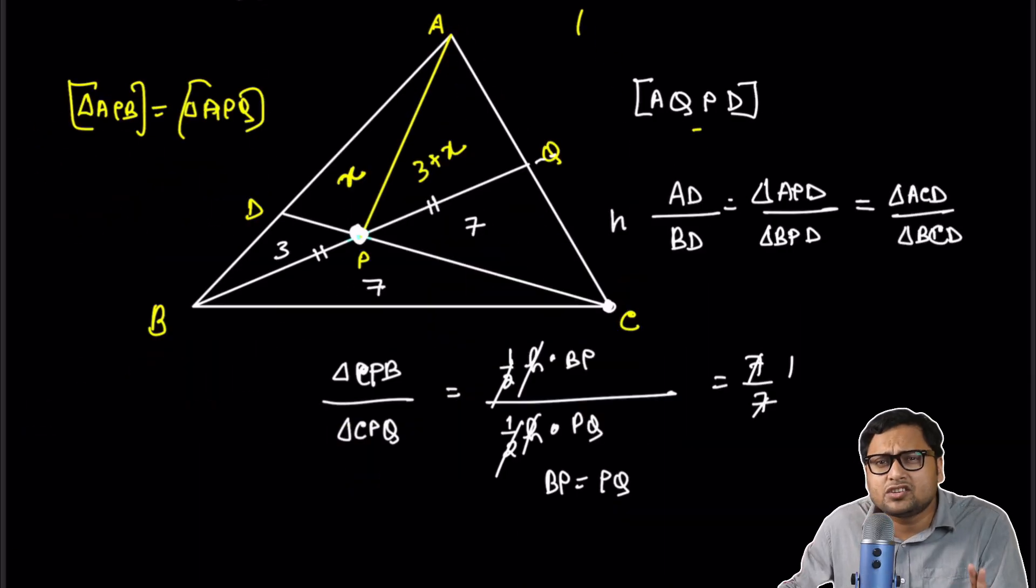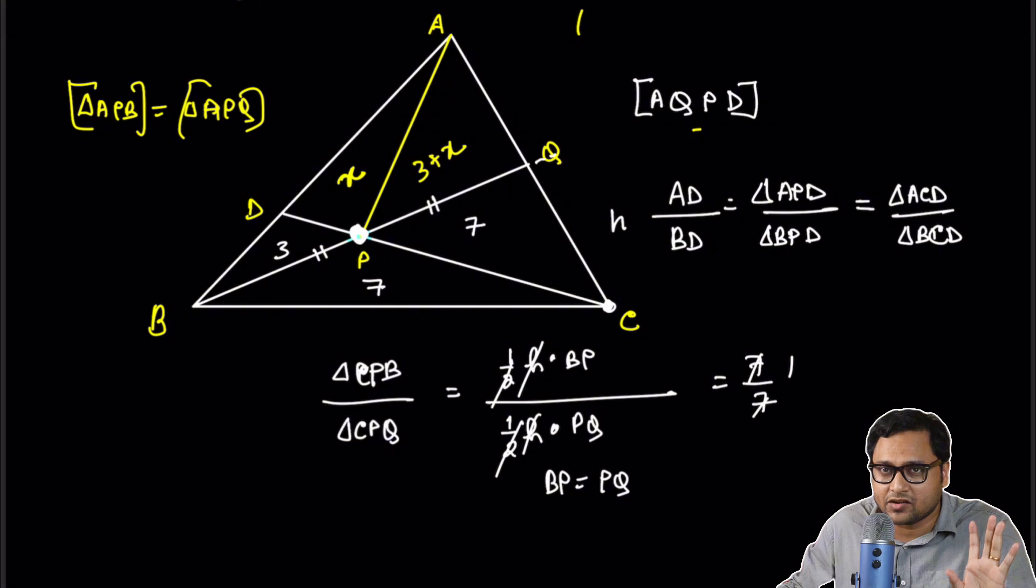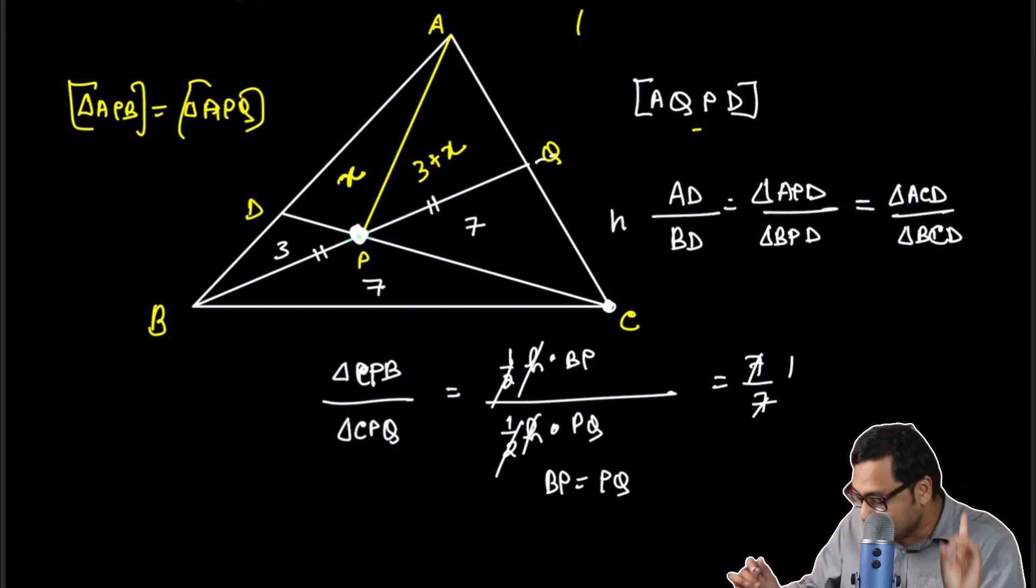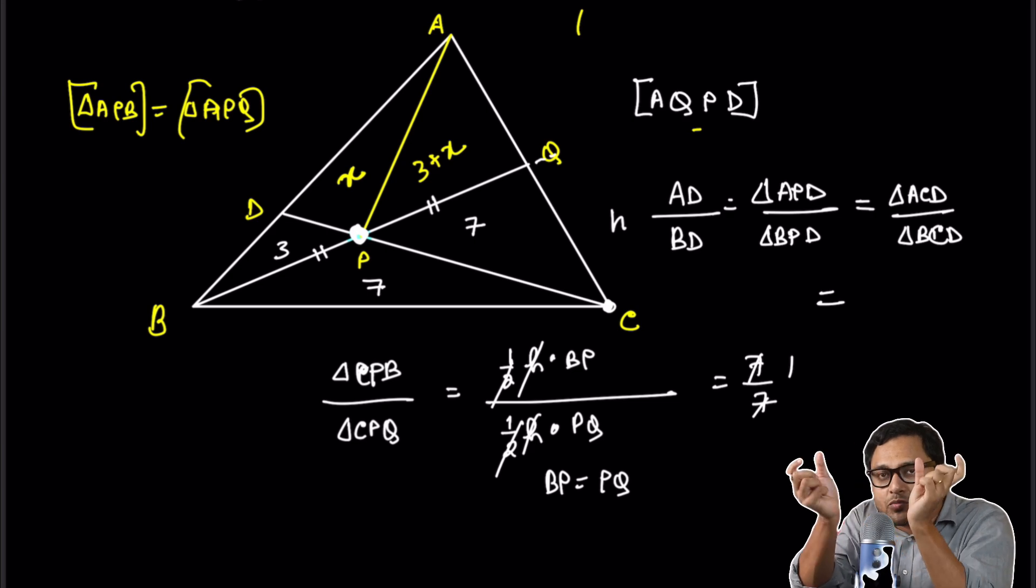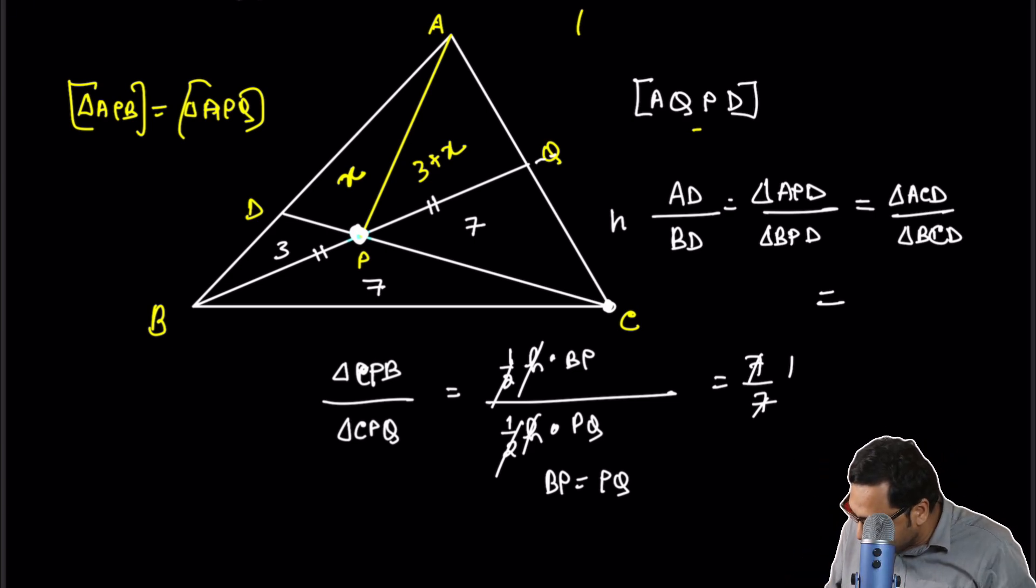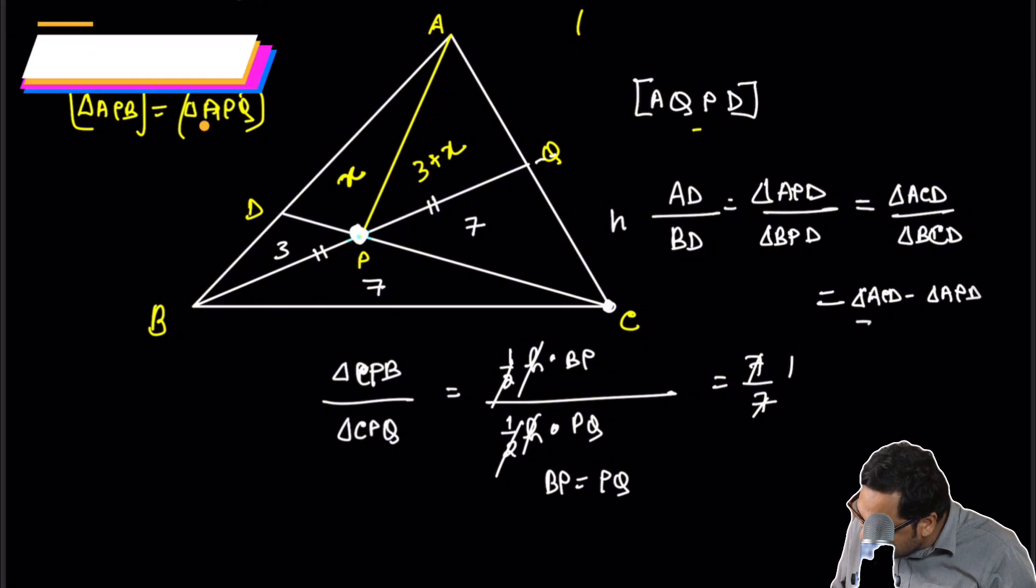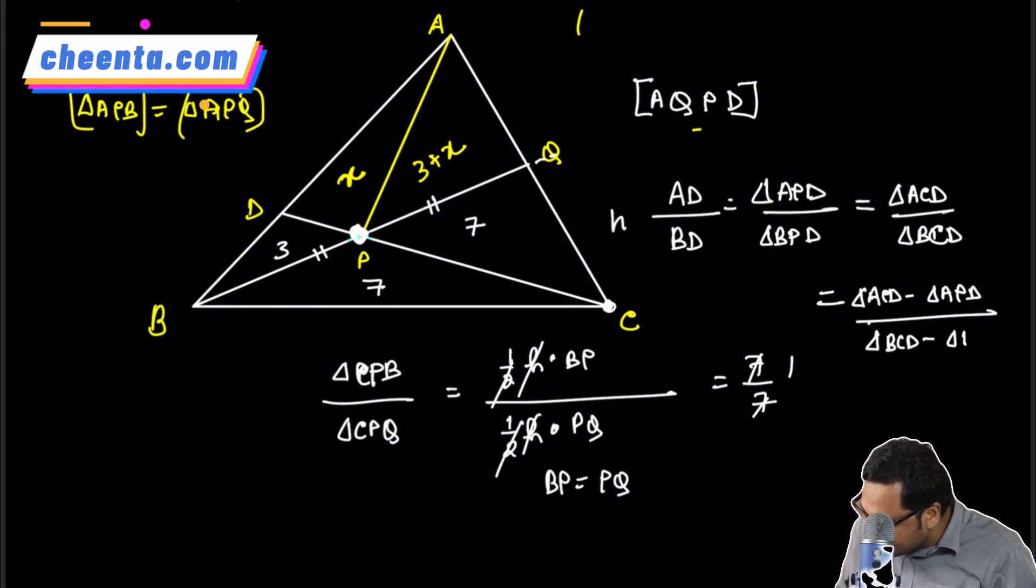And though we really don't have to use this subtrahendo principle, but since we are trying to learn it, let me just do it anyway. This is equal to, you subtract the numerators, you subtract the denominators. So triangle ACD minus triangle APD divided by triangle BCD minus triangle BPD.